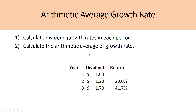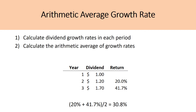Looking at this quick example, we'd calculate using base year 1 the growth rate from year 1 to year 2, which is 20%, and then from year 2 to year 3, which is 41.7%. Once we've calculated the returns in each period, we calculate the arithmetic average of those growth rates — simply summing up those returns and dividing by the number of returns — which is 20% plus 41.7% divided by 2, giving an arithmetic average growth rate of 30.8%.